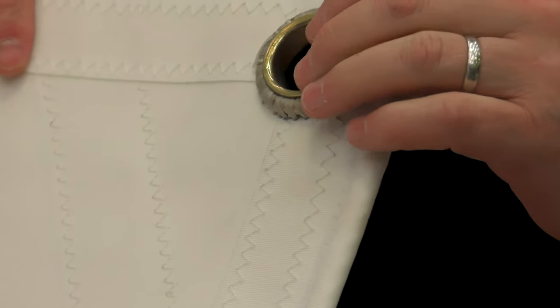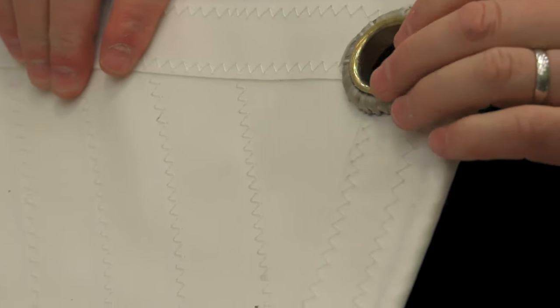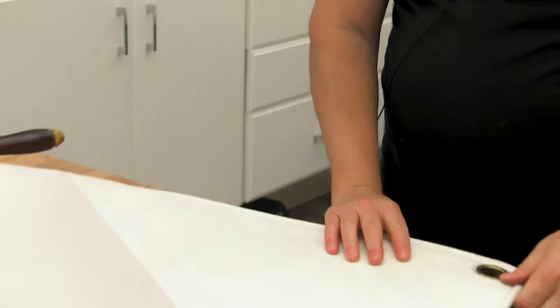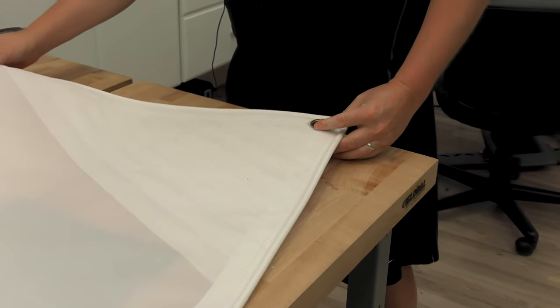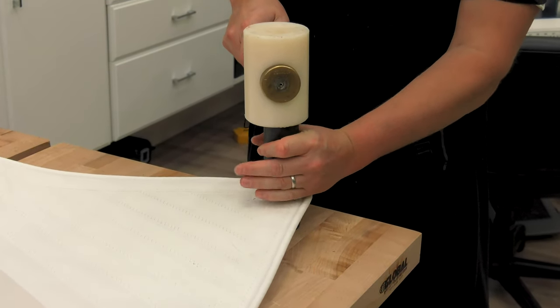Once it gets to this point, you see it's not completely set yet. You can still see some space. I like to flip the sail over and just go on the other side with a couple hits from the backside.